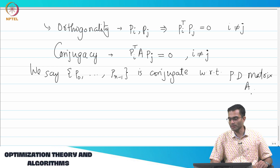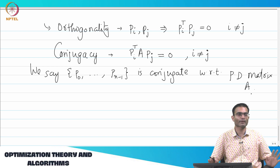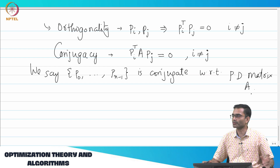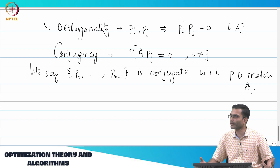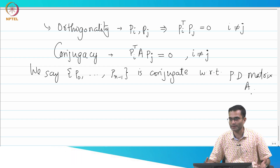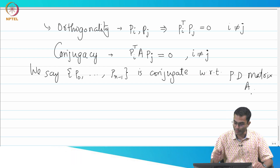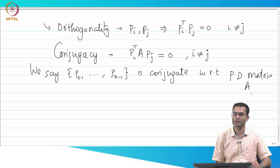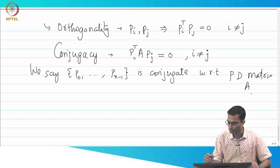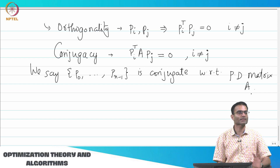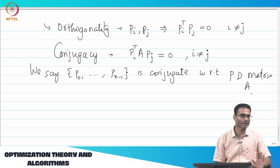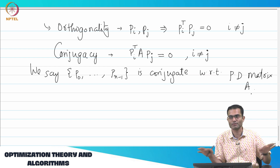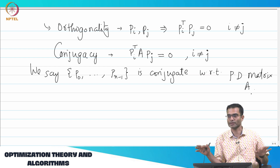Getting back to these newly defined conjugate vectors — first question is: who cares? What is so special about them? It turns out that if these N vectors are conjugate with respect to a positive definite matrix A, there is a surprising property that comes, which is going to be the basis of the conjugate gradient method.